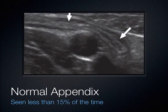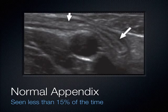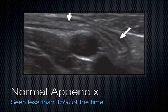Ultrasound has poor specificity for appendicitis partly because the normal appendix is only seen about 15% of the time. I got lucky recently and saw a normal appendix — I called a bunch of people in to see it. Usually when you're looking for appendicitis, you compress in the right lower quadrant and just see a bunch of loops of bowel. What a normal appendix looks like is a blind-ended tubular structure that hangs off the terminal ileum. Burn that image in your mind — you may not see it for a while.